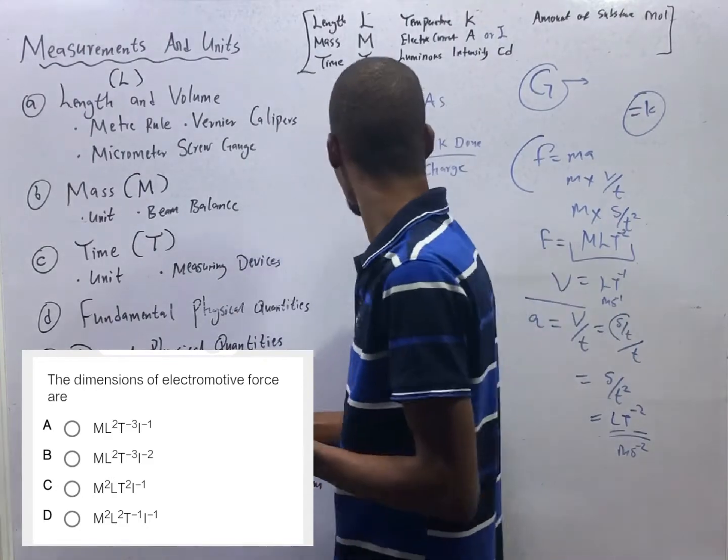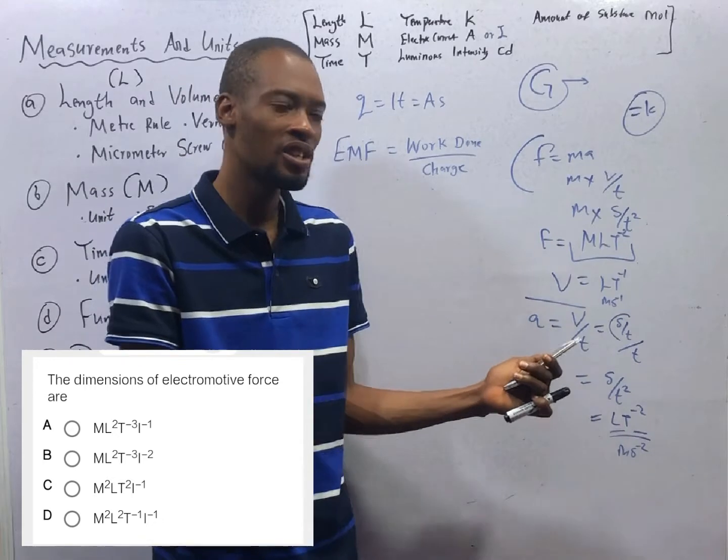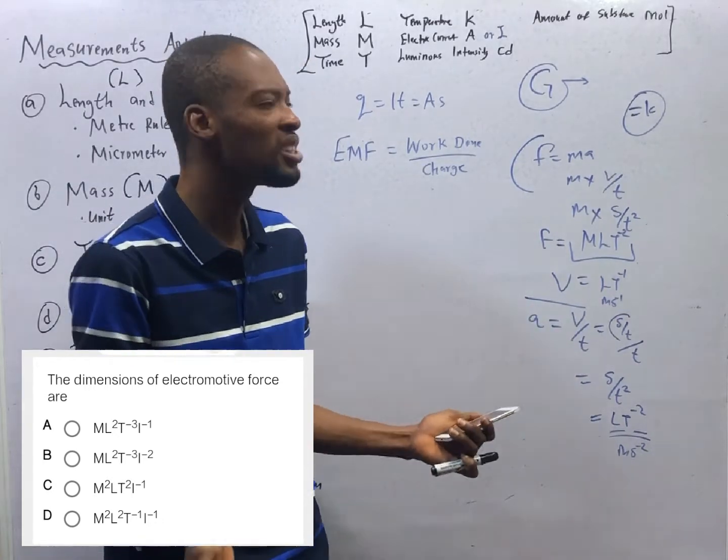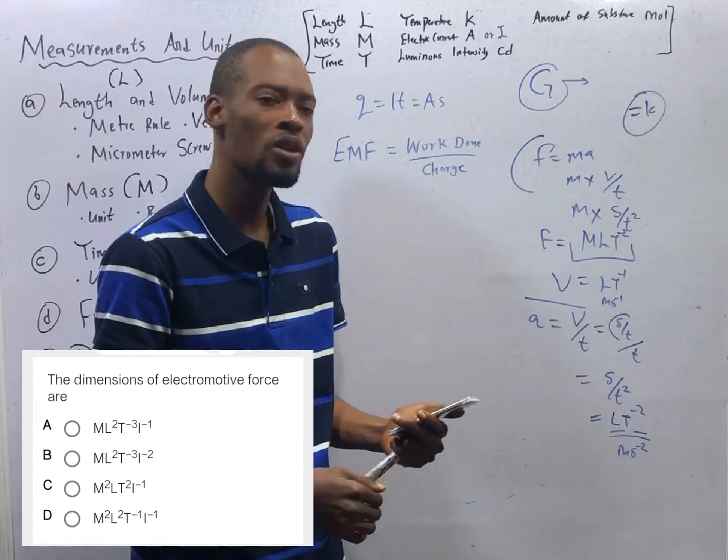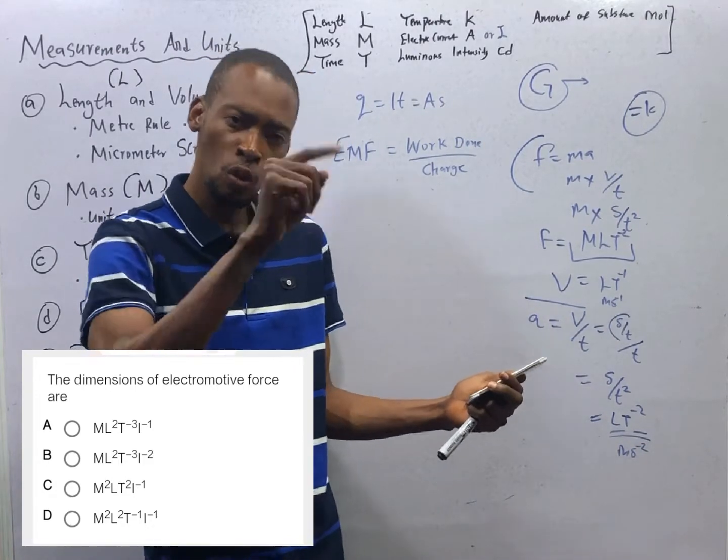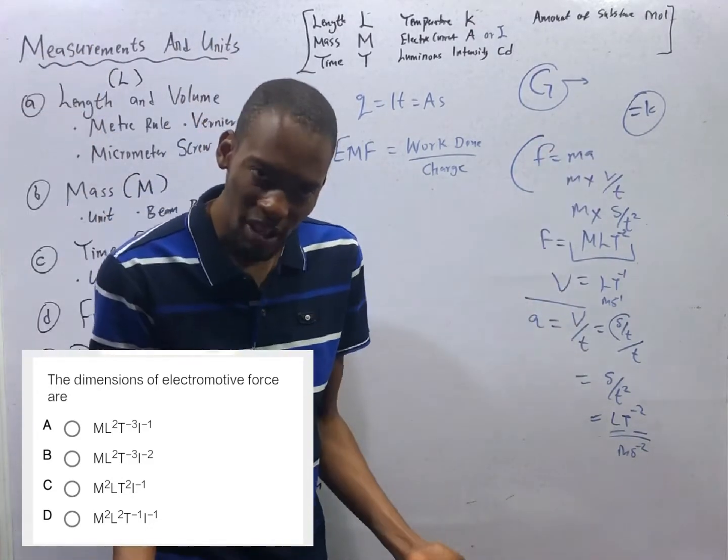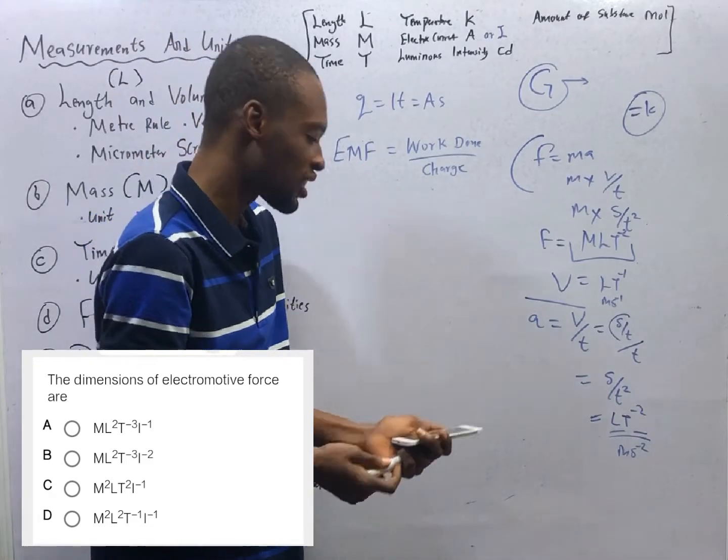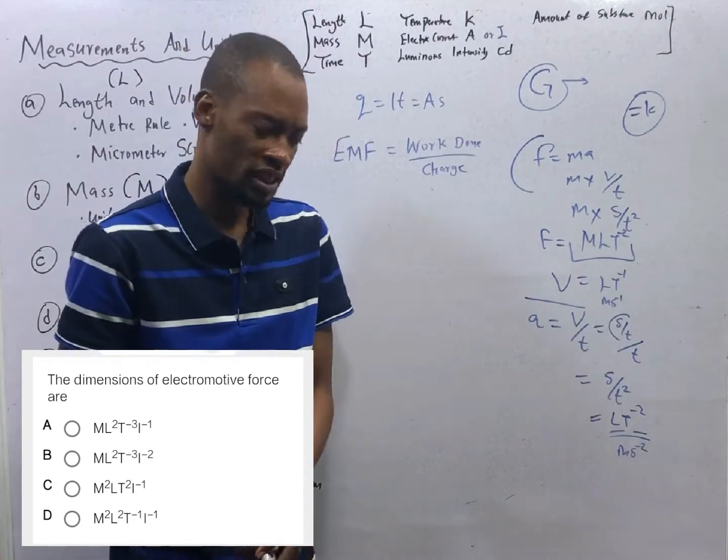Electromotive force is simply the energy provided by a battery to one unit or one coulomb of charge passing through it. When current is not flowing, EMF is equal to terminal potential. It is equal to voltage when no current flows. In simple term, EMF is work done over charge. That is electromotive force. Work done over charge.